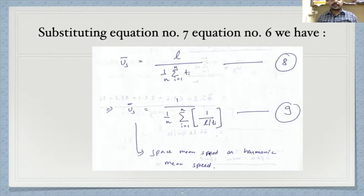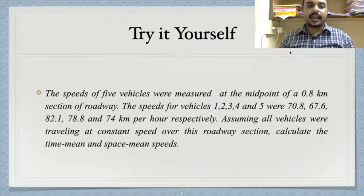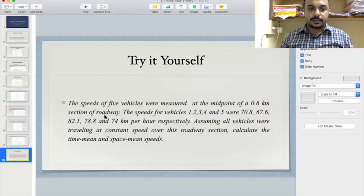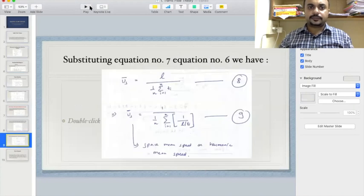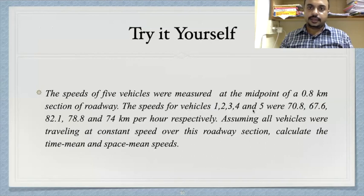For today's conclusion, you have been given an example problem: five vehicles moving at five different speeds — calculate both the time mean speed (arithmetic mean of speeds) and the space mean speed (harmonic mean of speeds) using the formulas discussed. Please submit your solutions. Thank you.